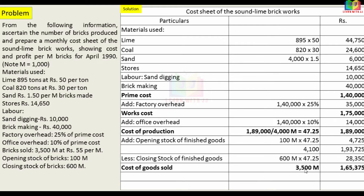Cost of goods sold: 4,100 M minus closing stock 600 M = 3,500 M sold. Cost of goods sold value = 1,65,375. Sales: 3,500 M at 55 rupees per M = 1,92,500. Profit = Sales minus cost of goods sold = 1,92,500 minus 1,65,375 = 27,125.